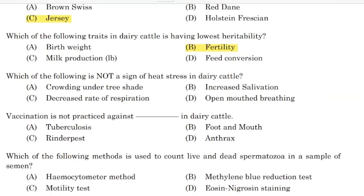Correct answer: Option C — Decreased rate of respiration. Vaccination is not practiced against which disease in dairy cattle?